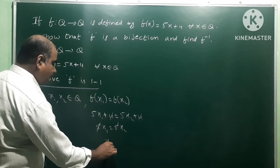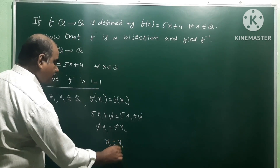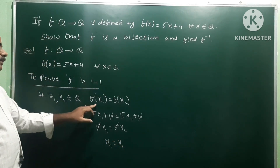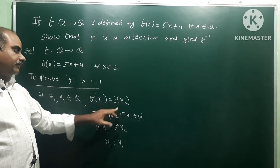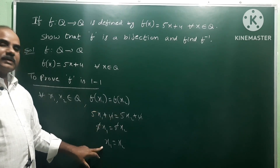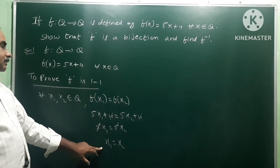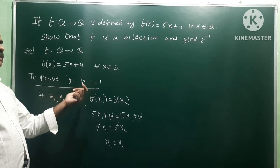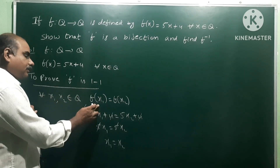Therefore x1 = x2. Since f(x1) = f(x2) implies x1 = x2, the function f is one-to-one.